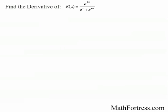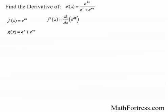This is the final example. Find the derivative of r of x equals e raised to the power of 2x over the quantity e to the x plus e to the negative x. This requires the application of the quotient rule. In order to use the quotient rule, we need to find the derivative of the numerator and the denominator. The derivative of the numerator requires the chain rule, where the outer function is e to the x and the inner function is 2x. Applying the chain rule, the derivative is equal to 2 times e raised to the 2x.